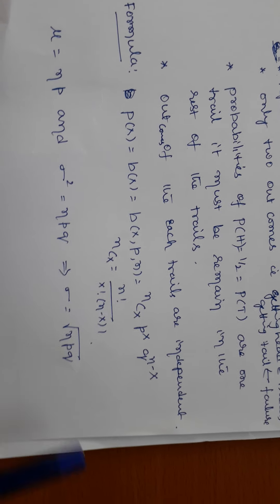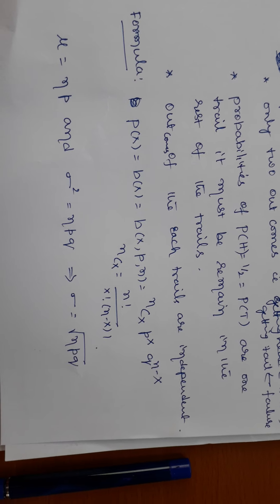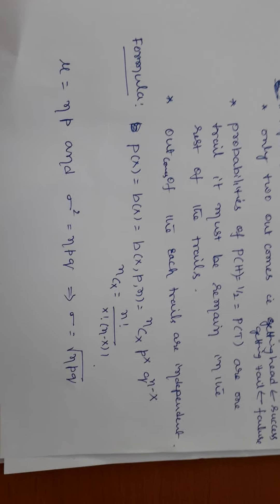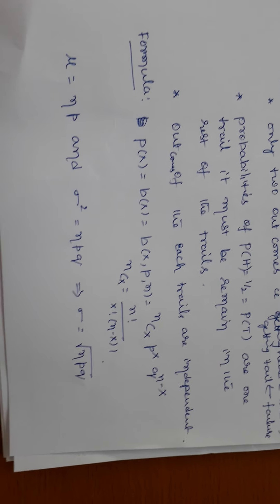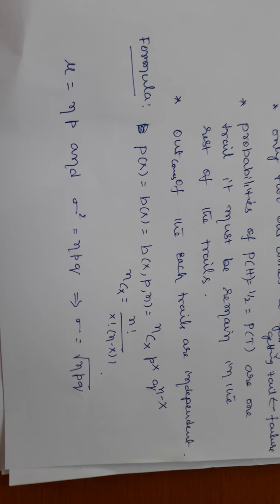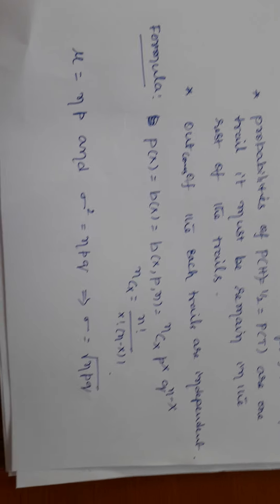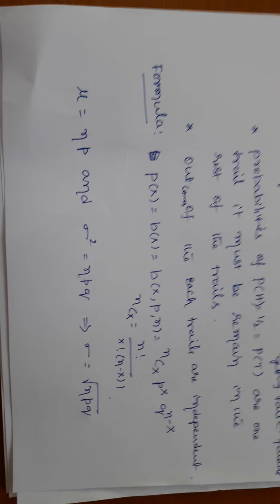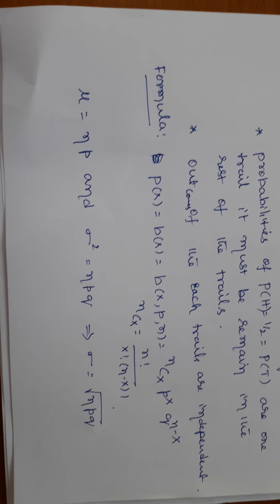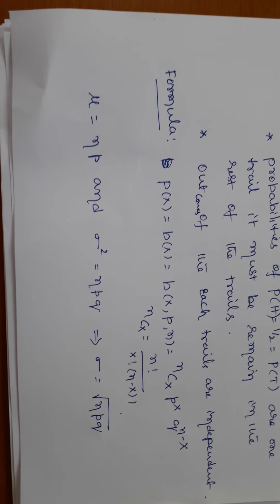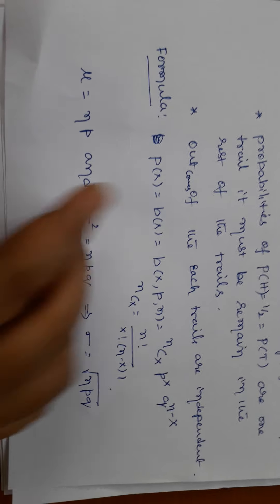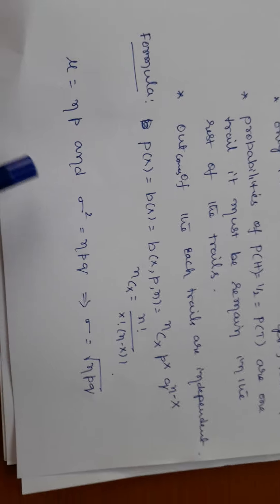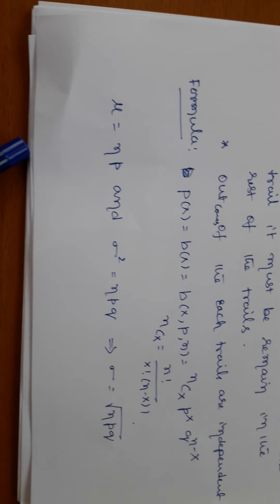Outcomes of each trial are also independent. For example, getting a tail on the second toss does not depend on getting a head on the first toss. Therefore, tossing a coin is an independent trial. So this is an example of a Bernoulli trial, and the process is called Bernoulli distribution, or binomial distribution.